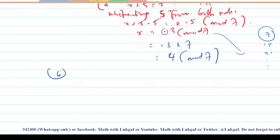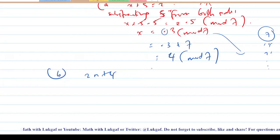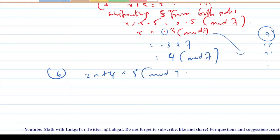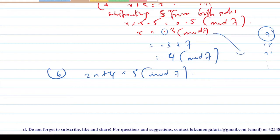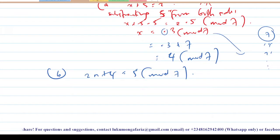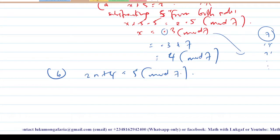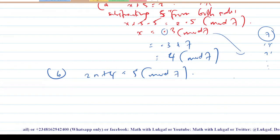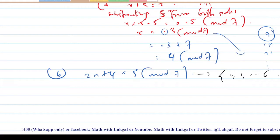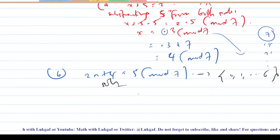Now let's solve the second one. We have 2n plus 4 congruent to 5 in modulo 7. You follow the same approach — do it like a simple linear equation, but in the context of modular arithmetic, modulo 7. Don't forget you must have something between 0 and 6.